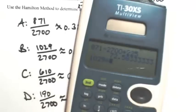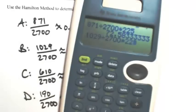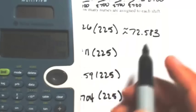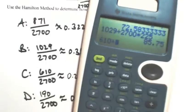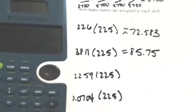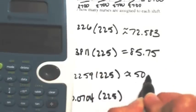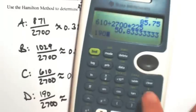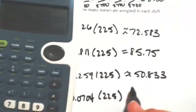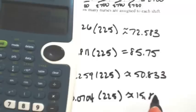1,029 divided by 2,700 times 225 is 85.75. 610 divided by 2,700 times 225 is about 50.833. And 190 divided by 2,700 times 225 is about 15.833.